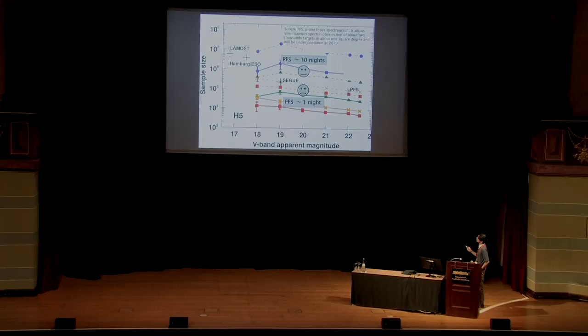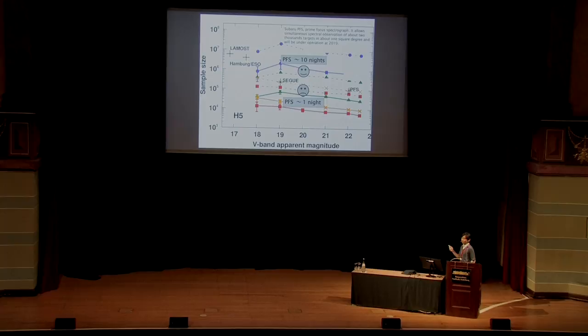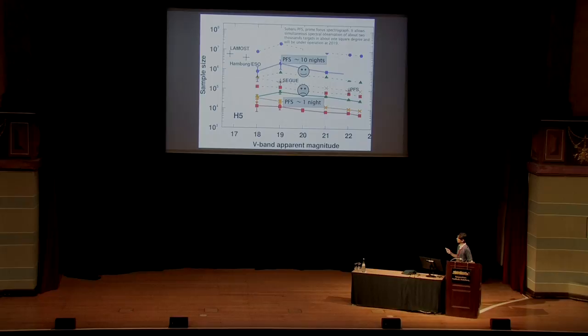Next, we consider future observations like Subaru PFS — the Prime Focus Spectrograph — which allows simultaneous spectral observation of about 2,000 targets in about one square degree and will be in operation in 2019. If we have one night of observations, the result will constrain the number of low-mass Population 3 stars per mini-halo to less than 1. And if we have 10 nights, we can constrain it to less than 0.1 low-mass Population 3 stars per mini-halo.